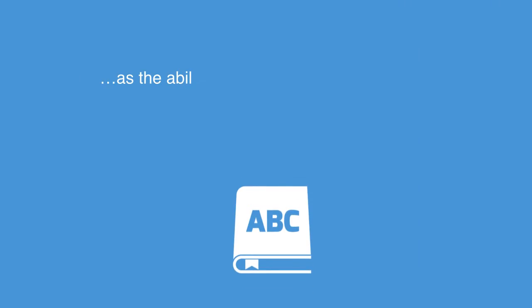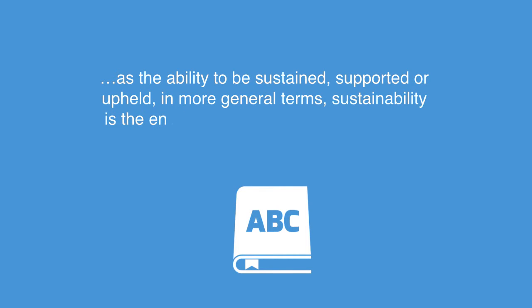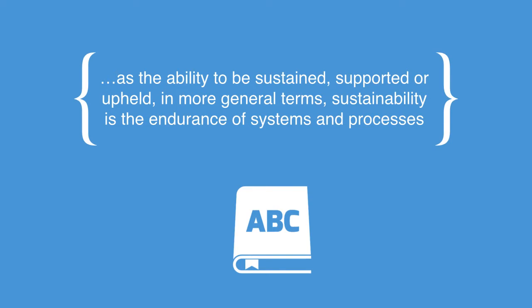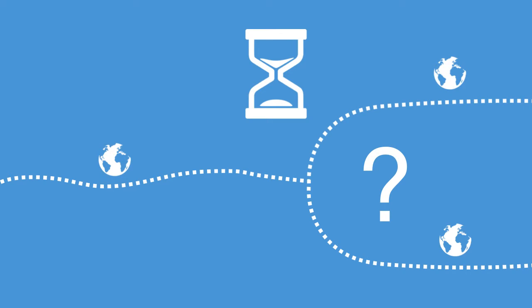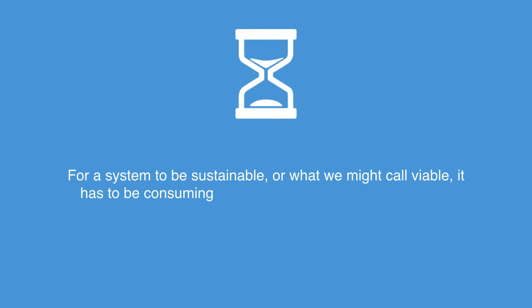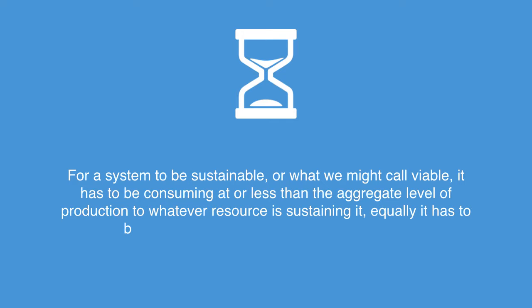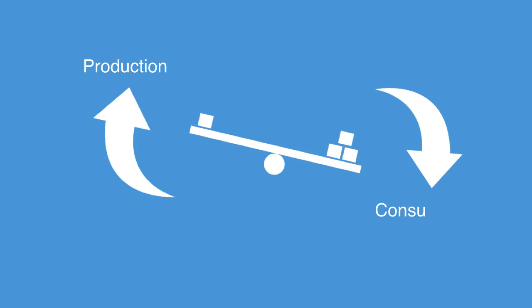Sustainability can be defined as the ability to be sustained, supported, or upheld. More generally, sustainability is the endurance of a system or process. When we talk about sustainability in the abstract, we're really talking about the state of the system over time — how long the system or process can continue at the current level of functionality before it becomes degraded to a lower level. For a system to be sustainable, or viable, it has to be consuming at or less than the aggregate level of production of whatever resource is sustaining it, and it has to be able to adapt to its changing environment.